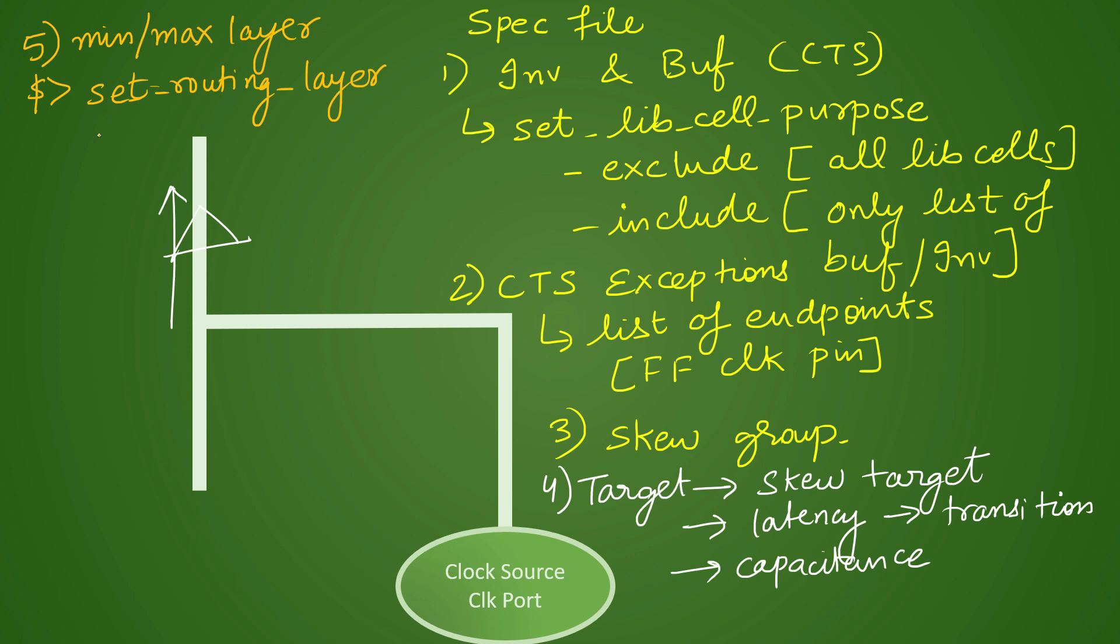With this command the tool will come to know which layers to be used for clock routing. Next set of rules that we specify is NDR, that is non-default rule. This is a very frequently asked question in interviews: what kind of NDR did you use in your project? NDR is a non-default rule because by default you have one spacing, one pitch, and one width. This kind of rule is by default for routing all the signals.